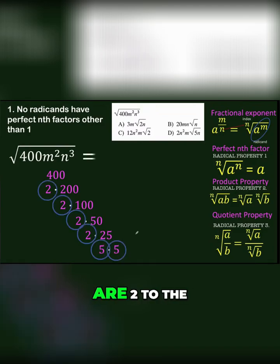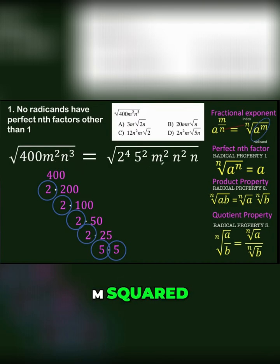So the prime factors are 2⁴ and 5². We copy the m². For n³, we split it as n² times n. What's the reason?